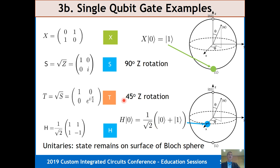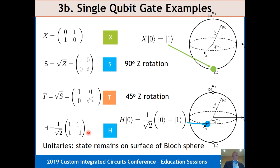Here are some examples of single-qubit gates. The X gate is just a rotation around the x-axis. If I start in the zero position on the Bloch sphere, rotate by pi around the x-axis, I end up at the one state. S and T gates are rotations around the z-axis — smaller rotations of pi/2 and pi/4. The Hadamard gate, if operated on the zero state, creates an equal superposition of zero and one right along the plus x-axis. Every single-qubit unitary essentially takes the zero state and puts it somewhere on the Bloch sphere.